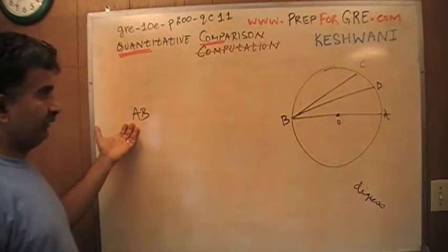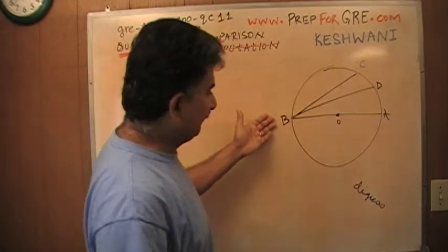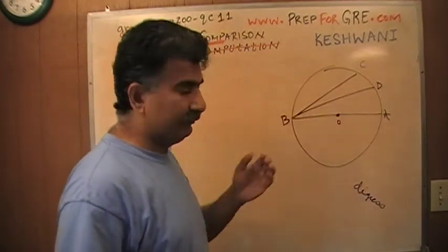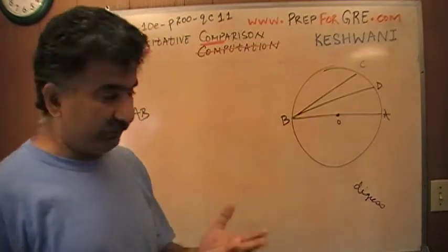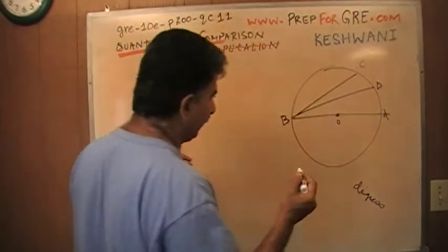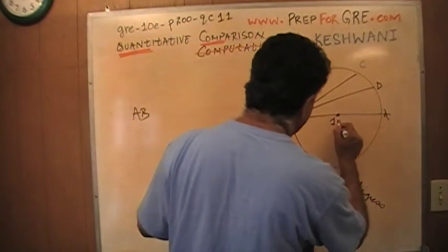They want you to compare the average of the length CB and CD versus AB. But AB of course is the diameter. Whatever BC is and whatever BD is, is less than the diameter because it does not go through the center. For example, I'm going to plug in a number here.